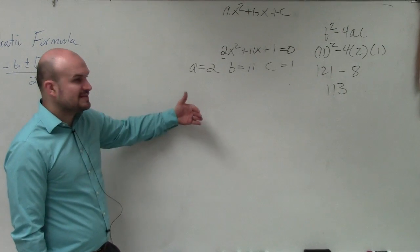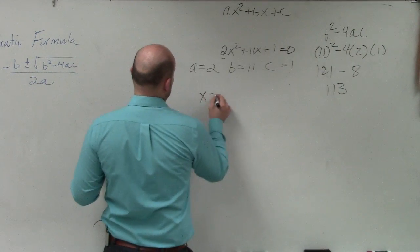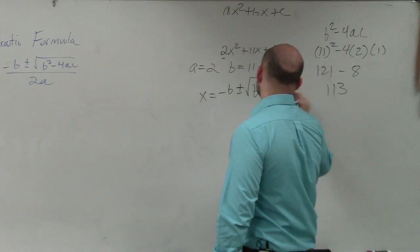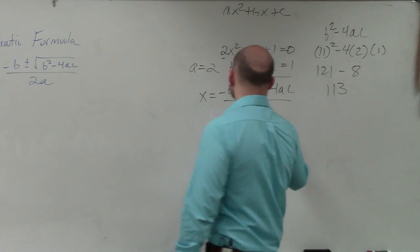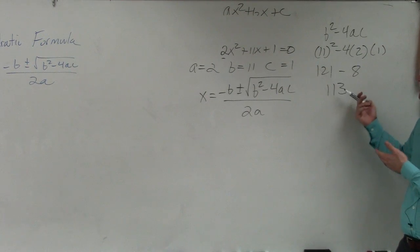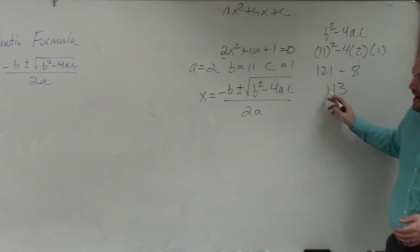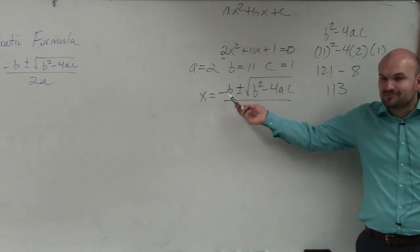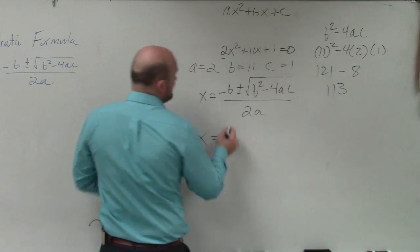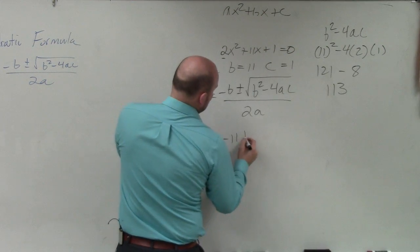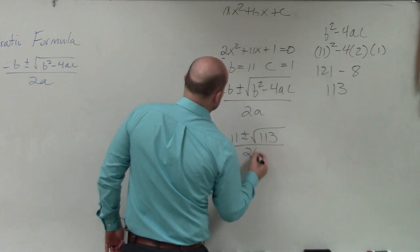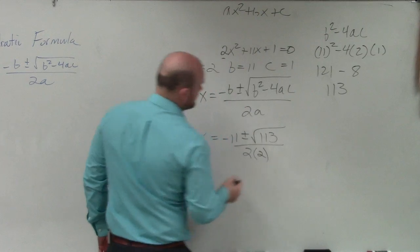Now, what we do is we take the rest of the quadratic formula, which I will provide to you, which is x equals opposite of B, plus or minus the square root of B squared minus 4 times A times C, all over 2 times A. Now, what I like about finding the discriminant first is you see that the discriminant already did this work under the square root. All I need to do is plug in the opposite of B and A. So I have x equals opposite of B, which is negative 11, plus or minus the square root of 113, divided by 2 times A, which is 2.